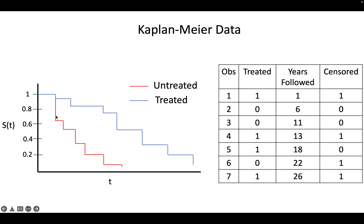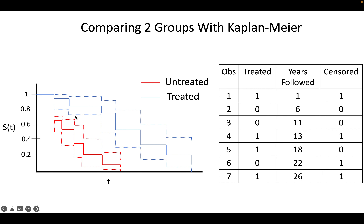You can have two survival functions comparing treated and untreated groups plotted together. Using confidence intervals, you can see if they overlap — overlapping intervals is evidence that there's not enough evidence to say the two groups are on different lines.